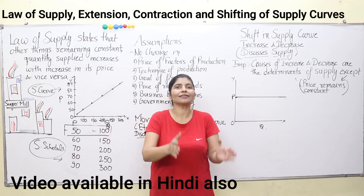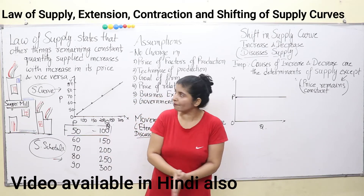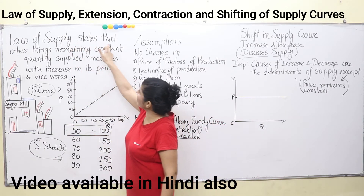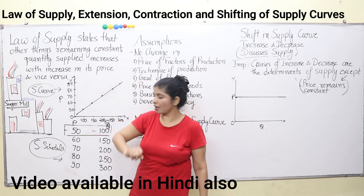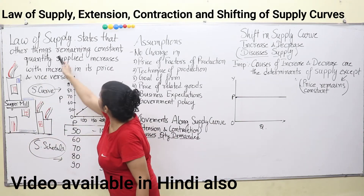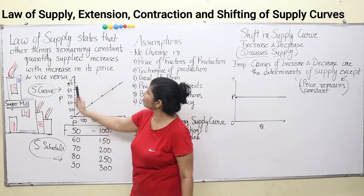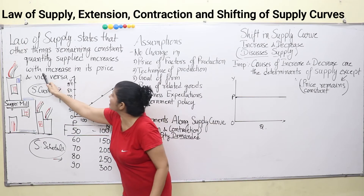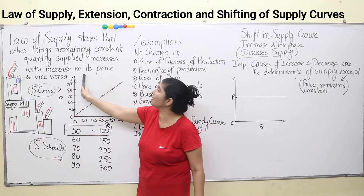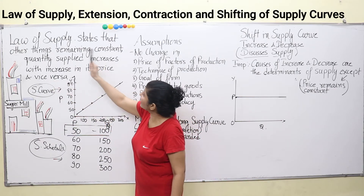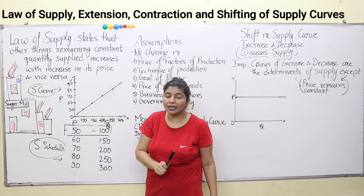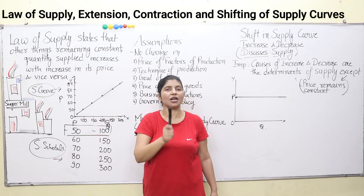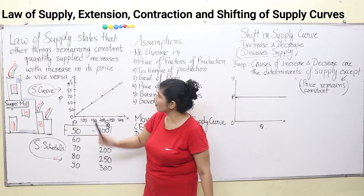So this is the basis of the law of supply. The law of supply states that other things remaining constant — that means other than price — only price affects the supply in the market.